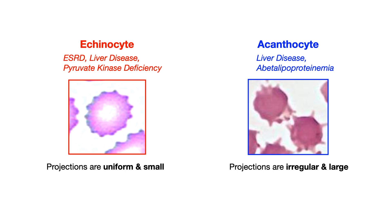The acanthocyte, also known as a spur cell, is associated with liver disease and specifically abetalipoproteinemia, where you have cholesterol dysregulation. In the acanthocyte, the projections are much more irregular, larger, spiny, and sharper-looking. Looking at the images, you can appreciate that the acanthocyte is very sharp, very irregular, and very spiny, while the echinocyte is much more uniform and much smaller. These are two completely different pathologic red blood cells — the only things they share are projections and association with liver disease.